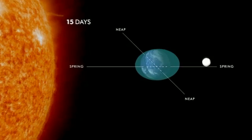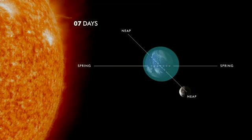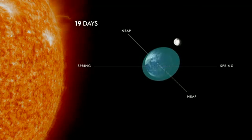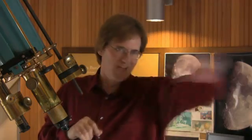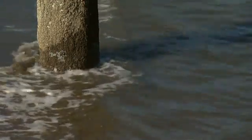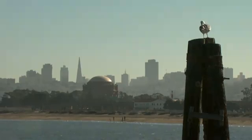Neap tide is when the tidal effects of the Sun and Moon are canceling each other out, or making each other not as extreme. That happens around the first and third quarter phases of the Moon — when the Sun is in one part of the sky and the Moon is 90 degrees around, pulling in different directions — so you get lower highs and higher lows during the neap tide.